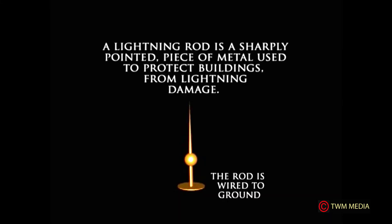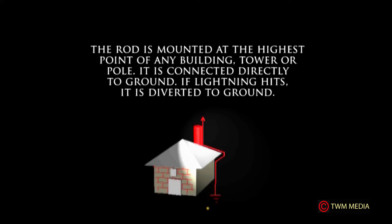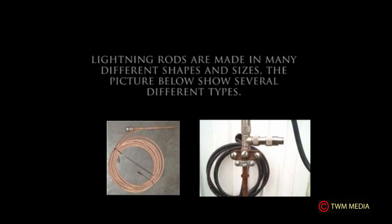It is very difficult to predict or prevent lightning strikes. The only protection is to provide an easy path to ground. This is done using an apparatus called a lightning rod. A lightning rod is a sharply pointed piece of metal used to protect buildings from lightning damage. The rod is mounted at the highest point of any building, tower, or pole, and is connected to ground. If lightning hits, it is diverted to ground. Lightning rods are made in many different shapes and sizes, as shown in the picture below.